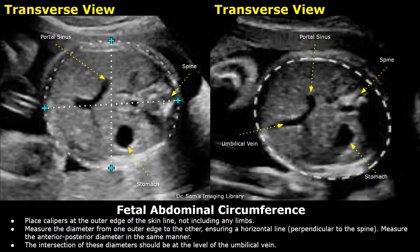Place the calipers at the outer edge of the skin line. Do not include any limbs. Place one caliper just behind the spine and the other caliper at the opposite side. Similarly, place the next two calipers perpendicular to this measurement, and you will get the value of abdominal circumference.